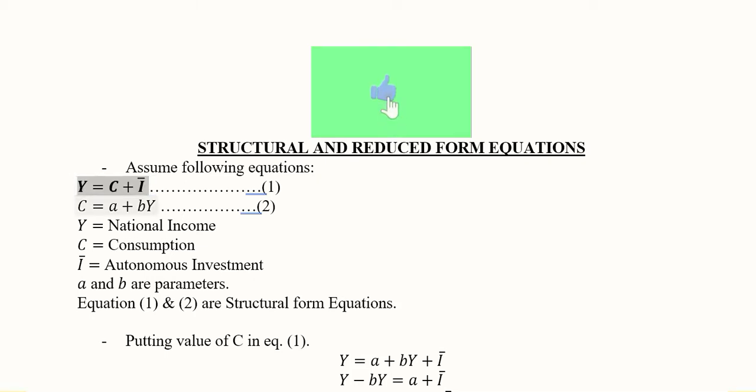We have this equation which is showing the national income in a two-sector economy and then the consumption function. We know about what Y stands for and C and capital I. A and B are the parameters.